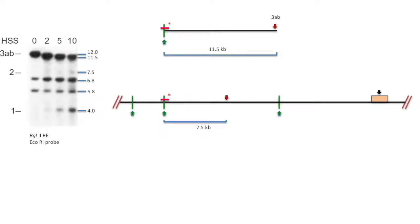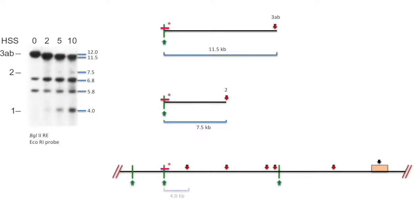So the hypersensitive site must be 7.5 kb away from the site. The smallest fragment is 4.0 kb, and its hypersensitive site is 4 kb away from the site. And this is how they found five different hypersensitive sites in the globin gene control region.